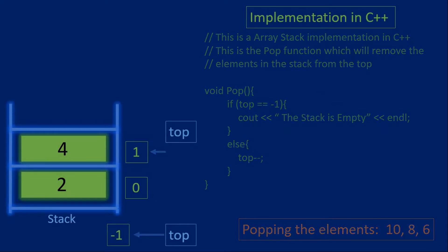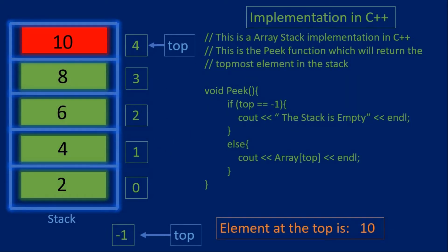The peek function will return the element at the top of the stack. So if we call the peek function on the stack, this function will first check if the stack is empty, or if the top variable is equal to negative one. If the stack is not empty, the else part of the code will be executed and we'll print out the value at the top. Since the top variable is equal to four, which is index four — the highest index in the stack — the value ten will be returned.